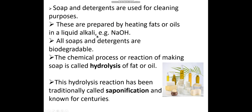Soap aur detergent iss tarah se banaya jata hai ke fats ya oils ko alkali — jaise sodium hydroxide ya potassium hydroxide — ke saath heat up kiya jata hai. All soaps and detergents are biodegradable and can be decomposed by living organisms. The chemical process for making soap is hydrolysis of fat or oil, which is traditionally known as saponification. This hydrolysis reaction has been known for centuries.